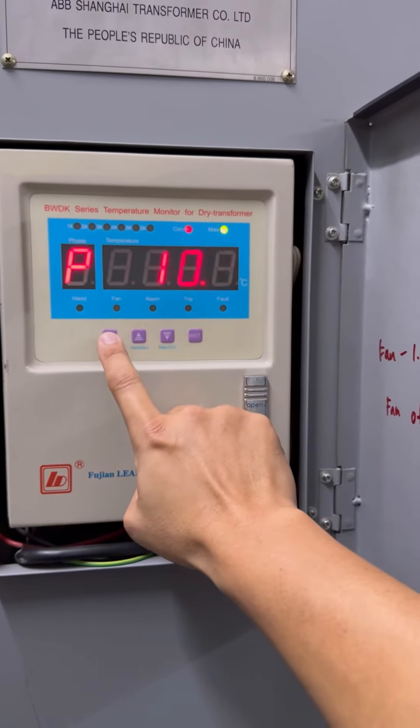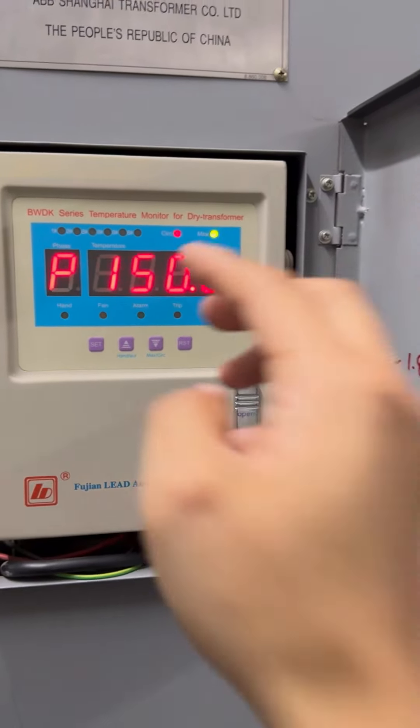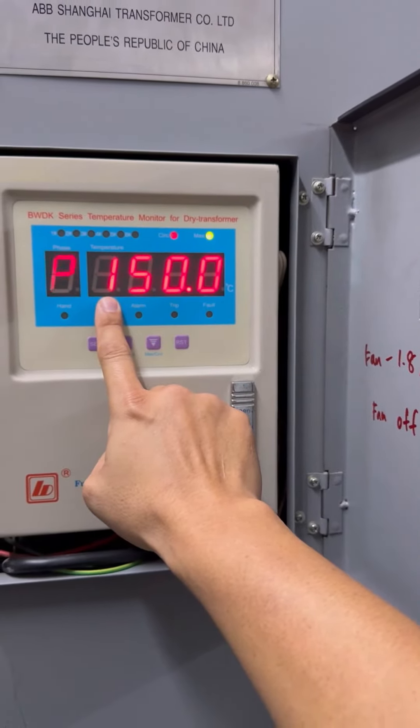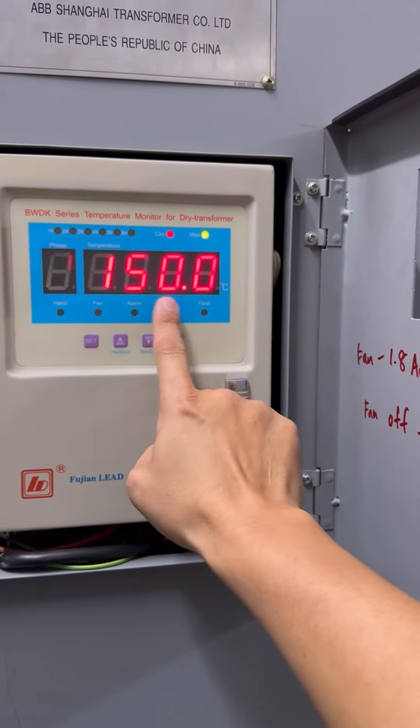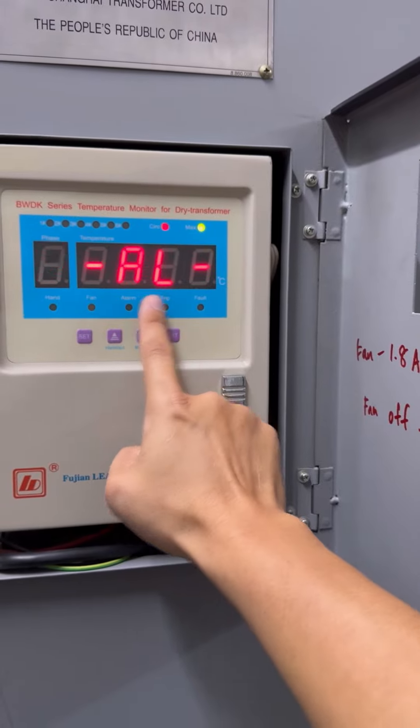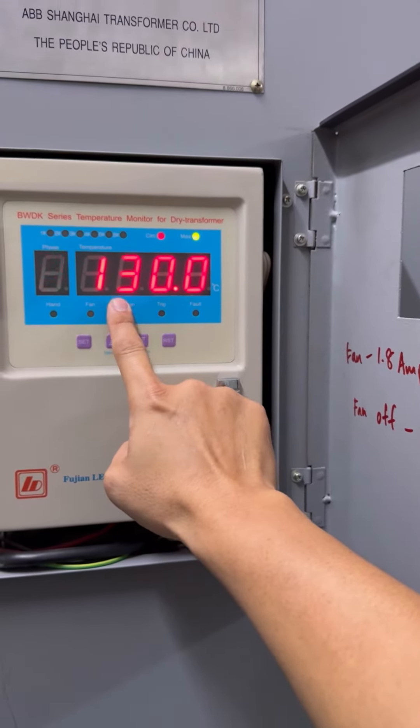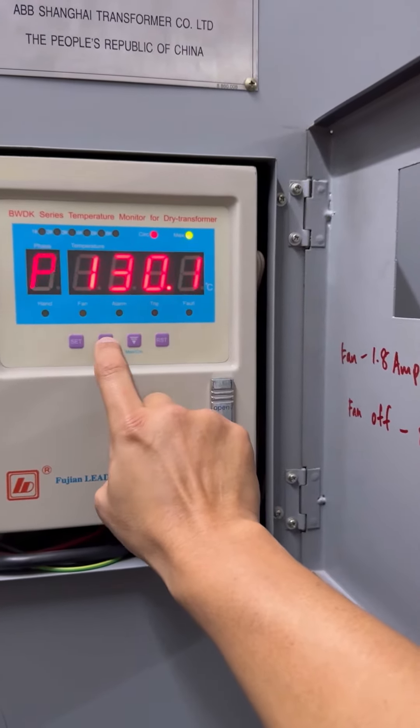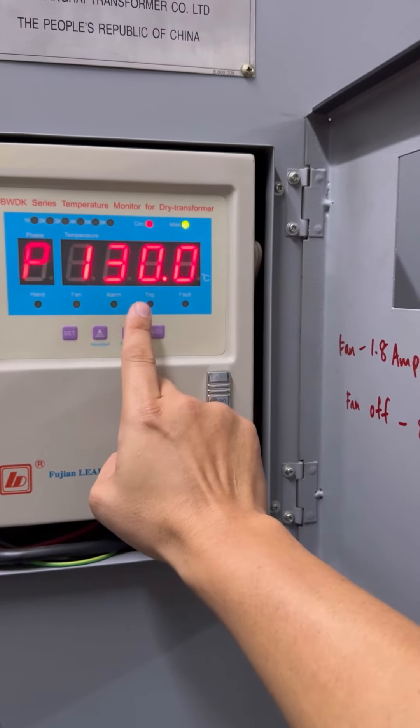You press again - this is chip, which is 150 degrees Celsius. Press again and this is alarm, which is 130 degrees Celsius. You can change the setting as you want.